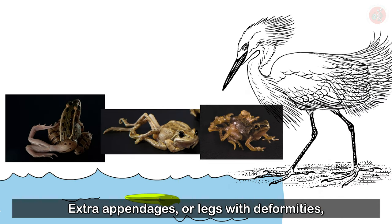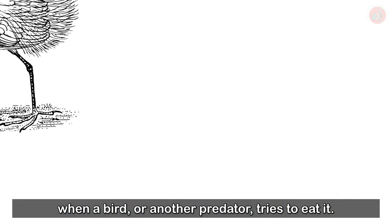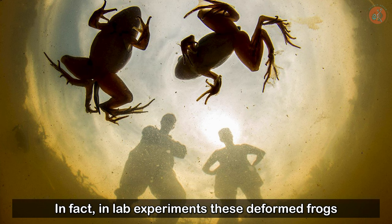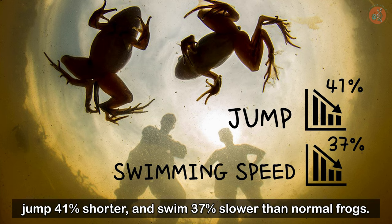Extra appendages or legs with deformities leave the frog unable to escape when a bird or another predator tries to eat it. In fact, in lab experiments, these deformed frogs jump 41% shorter and swim 37% slower than normal frogs.